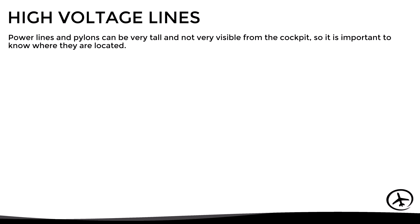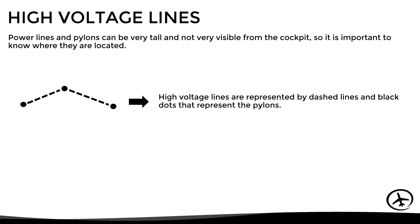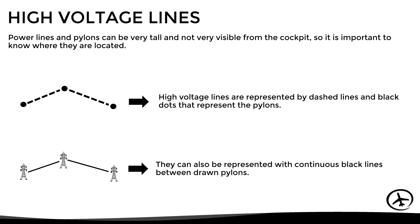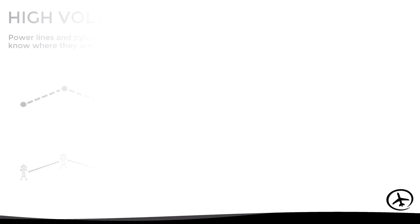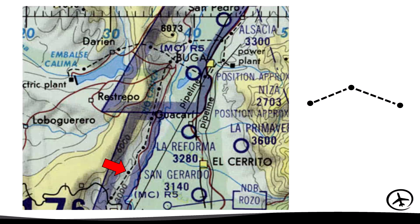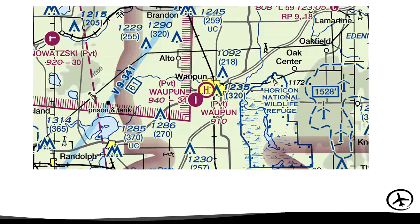Other important information for pilots, especially when flying at low altitude, is the position of power lines and pylons, since these can be very tall and not easily visible from the cockpit. High voltage lines are represented by dashed lines and black dots representing the pylons, however in some charts they can be represented with continuous black lines between drawn pylons. Here we can see examples of how power lines are represented in both operational and sectional charts.